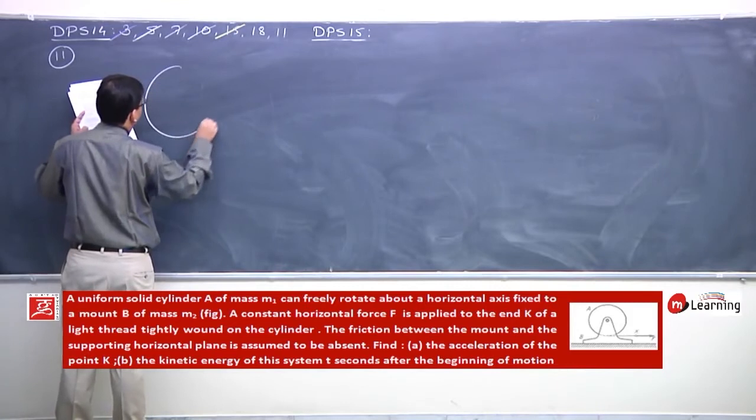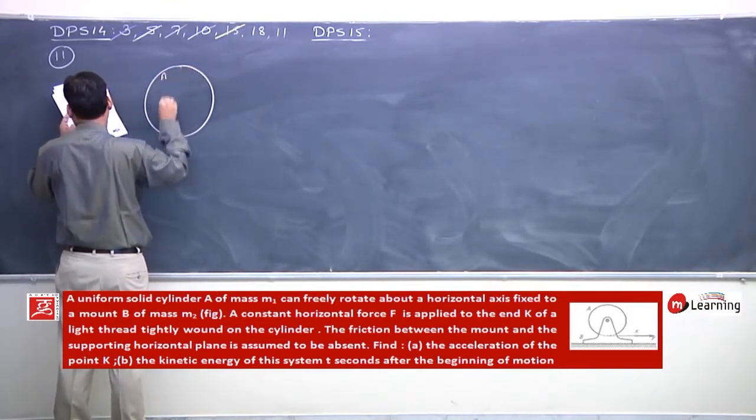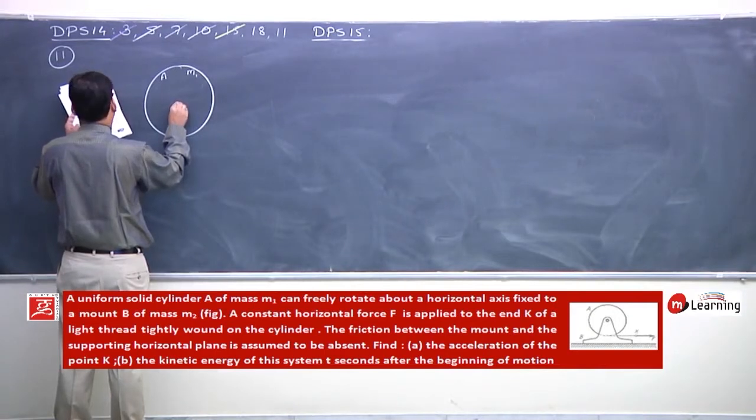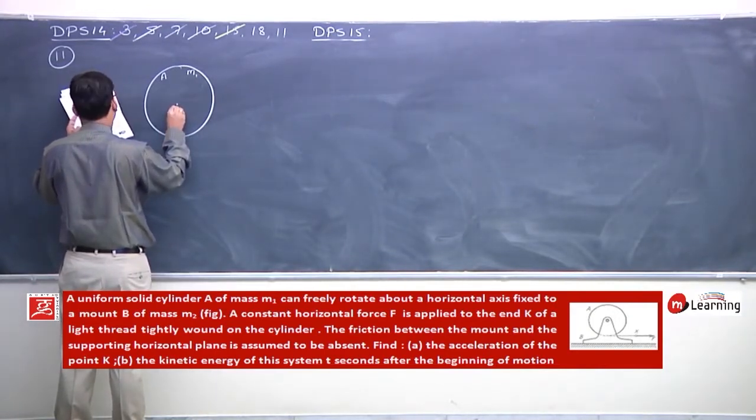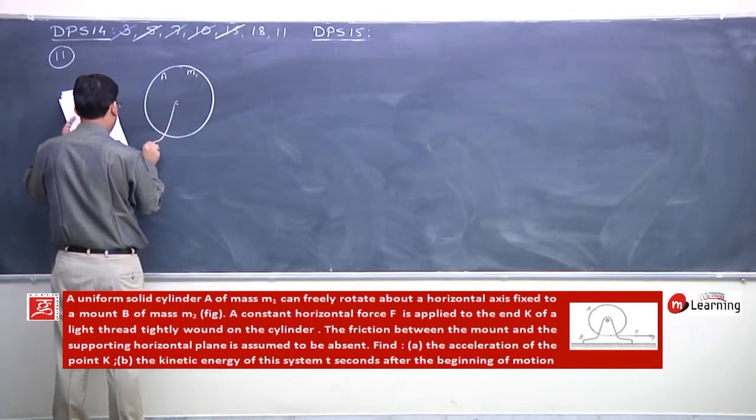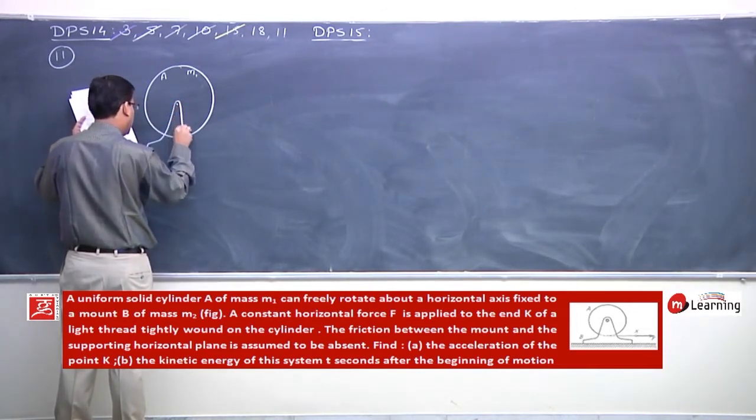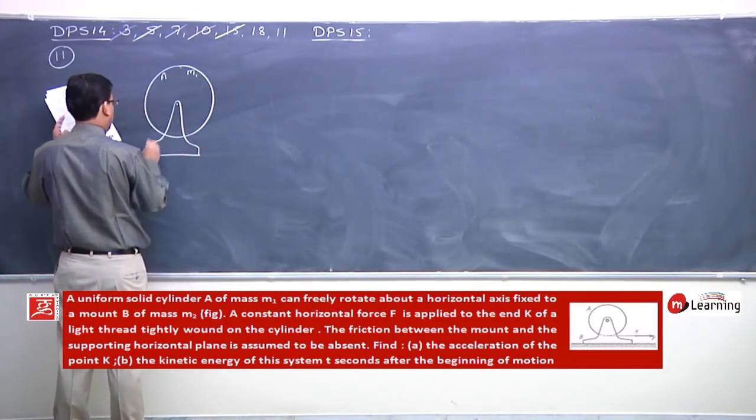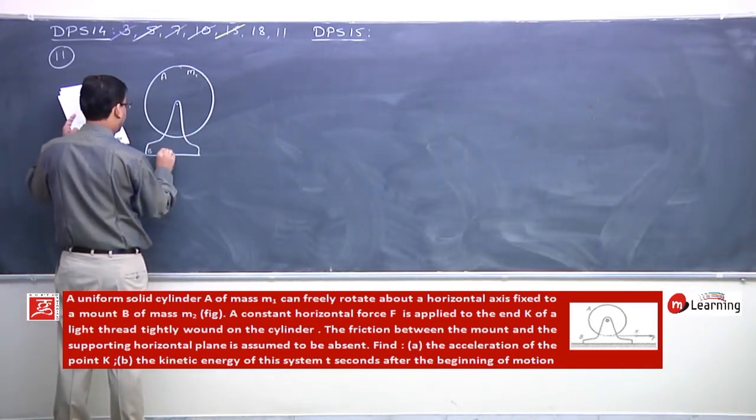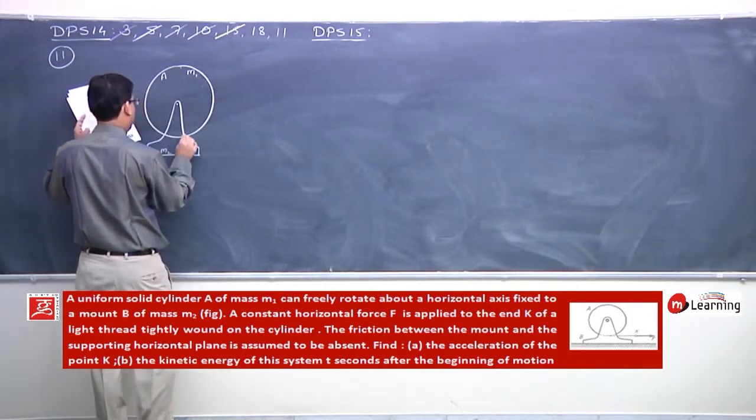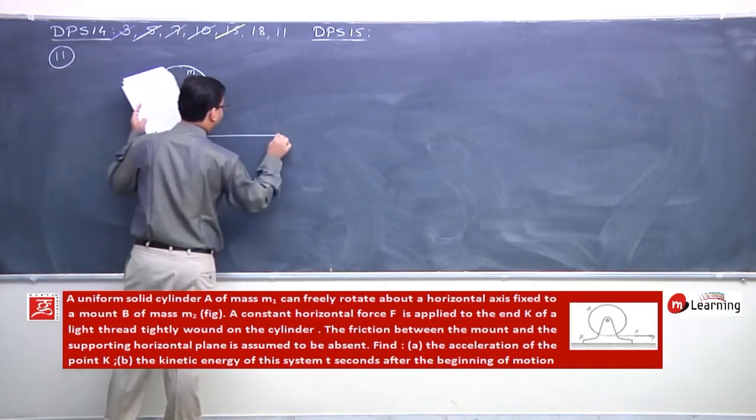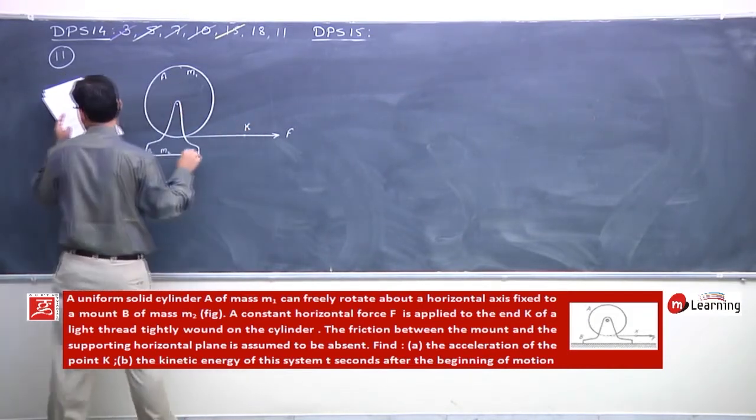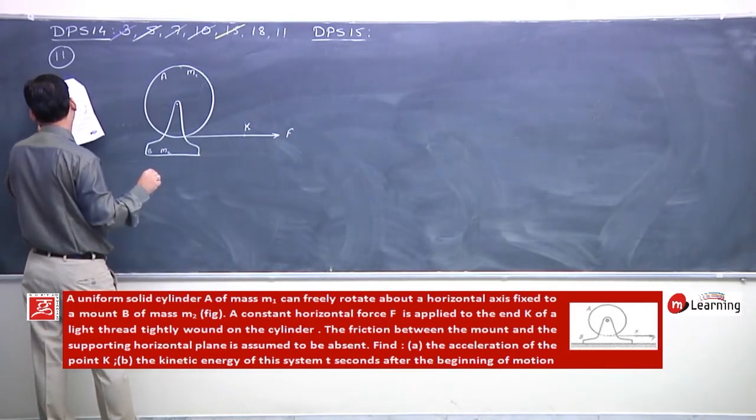A uniform solid cylinder A of mass M1 can freely rotate about a horizontal axis fixed to a mount B of mass M2. A constant force F is applied to the end of a light thread wound on the cylinder. The friction between mount and supporting horizontal plane is assumed to be absent.